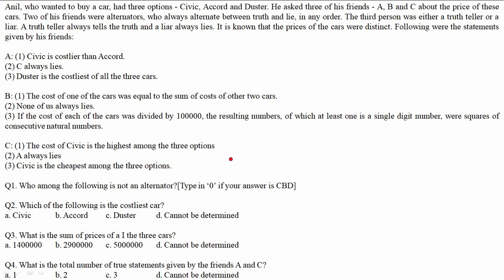The statement given was: Anil, who wanted to buy a car, had three options — Civic, Accord, and Duster. He asked three of his friends A, B, and C about the price of these cars. Two of his friends were alternators — out of these three friends, two will be alternators who always alternate between truth and lie in any order.